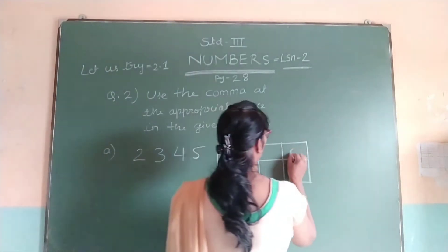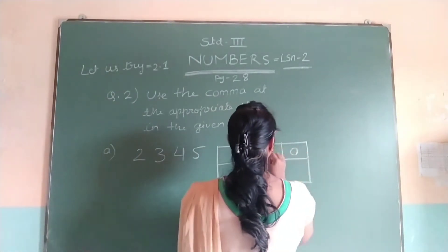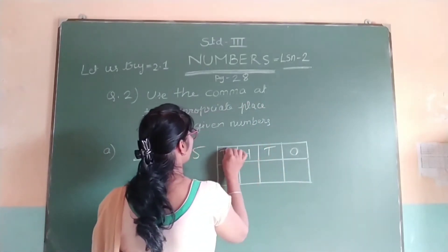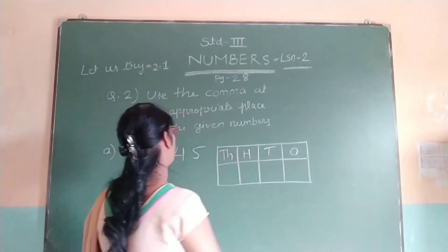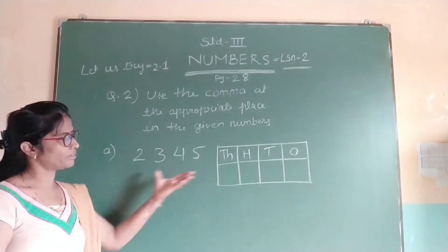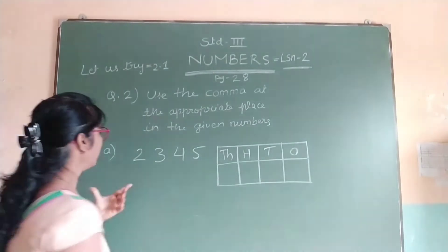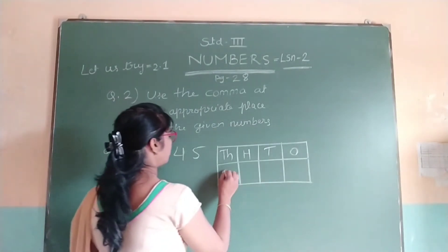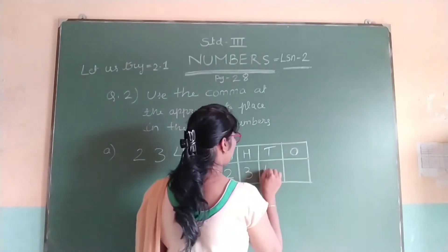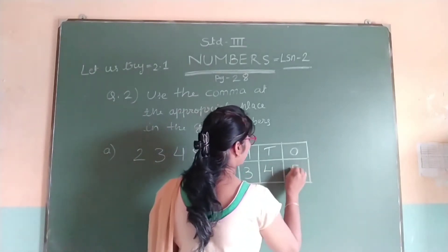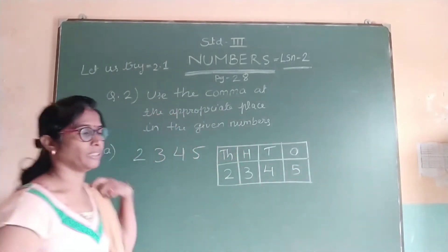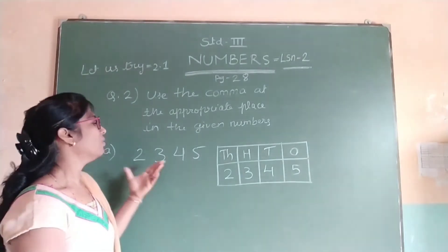So first we will write the number according to its places and then we will separate the periods. This is 1s place, this is 10s place, this is 100s place, and this is 1000s place. Because it is a 4-digit number it starts with 1000s place. So 2 is in 1000s place, 3 is in 100s place, 4 is in 10s place, and 5 is in 1s place.